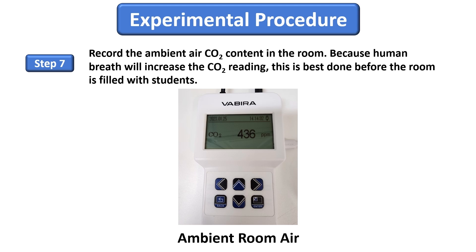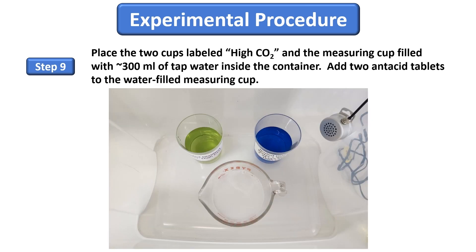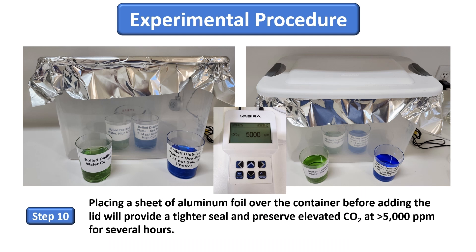Record the ambient air CO2 content in the room, making sure to calibrate the CO2 meter first. Because human breath will increase the CO2 reading, this is best done before the room is filled with students. Position the sensor of the CO2 meter on an inside wall or floor of the container. Place the two cups labeled high CO2 inside the container — these are the experimental samples. The control samples should remain outside the container during the experiment. Then place the measuring cup filled with about 300 milliliters of tap water inside the container and add two antacid tablets. Place a sheet of aluminum foil over the container, crimping the edges of the foil around the lip of the container, then cover with the lid and lock in place. This will provide a tighter seal and preserve elevated CO2 at greater than 5,000 parts per million for several hours.